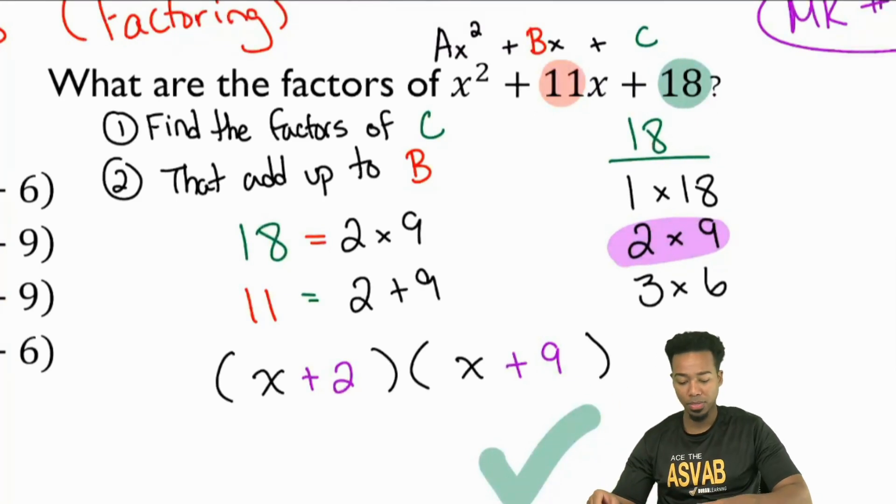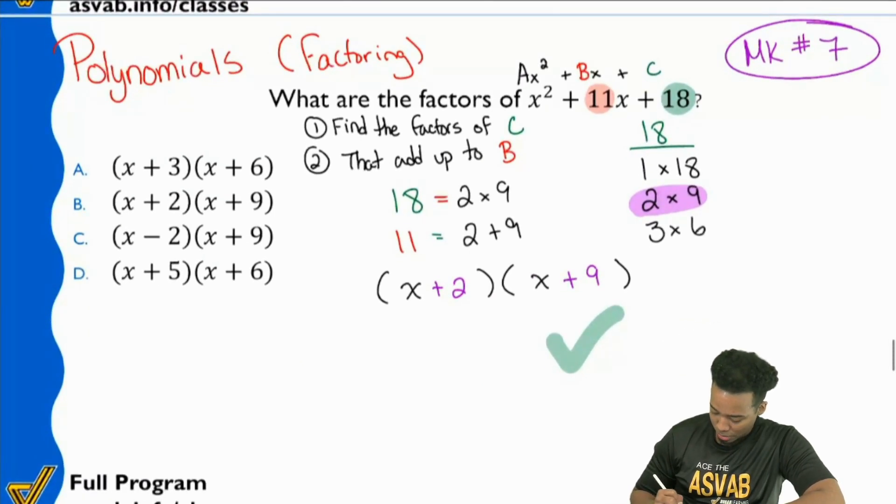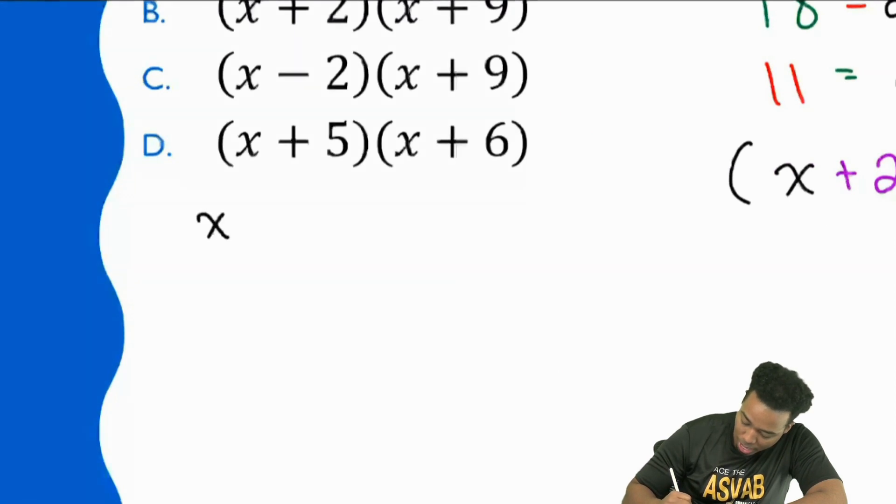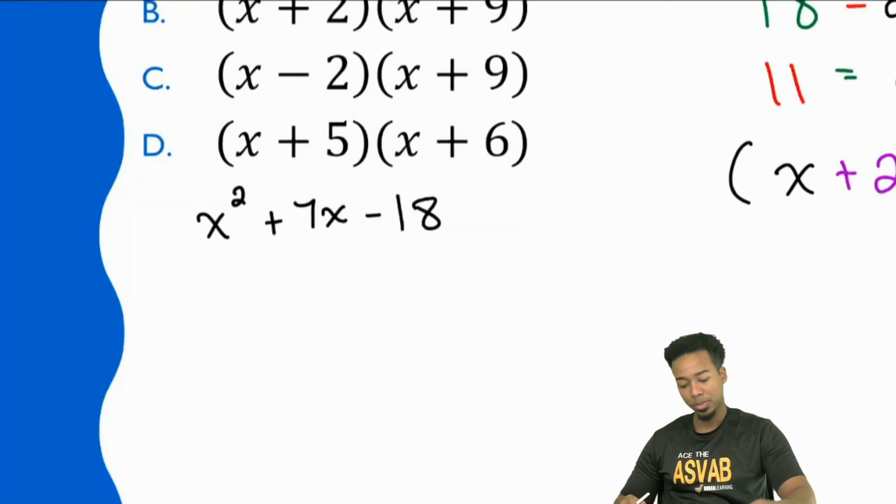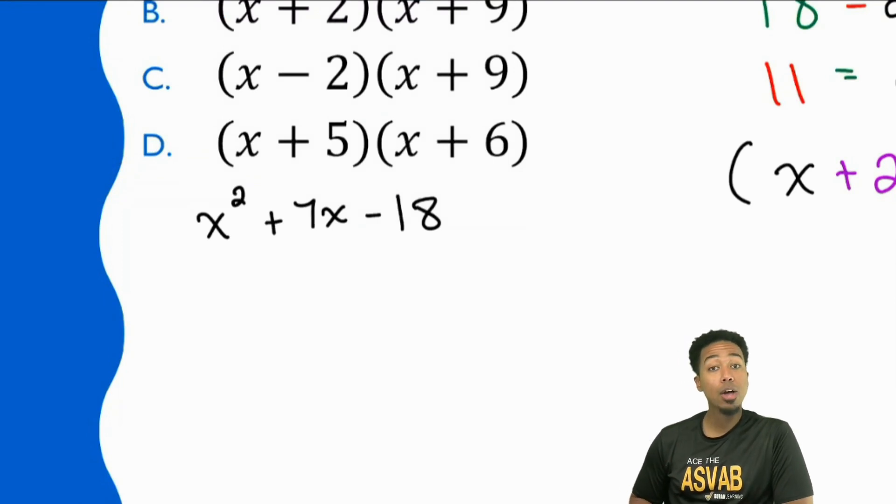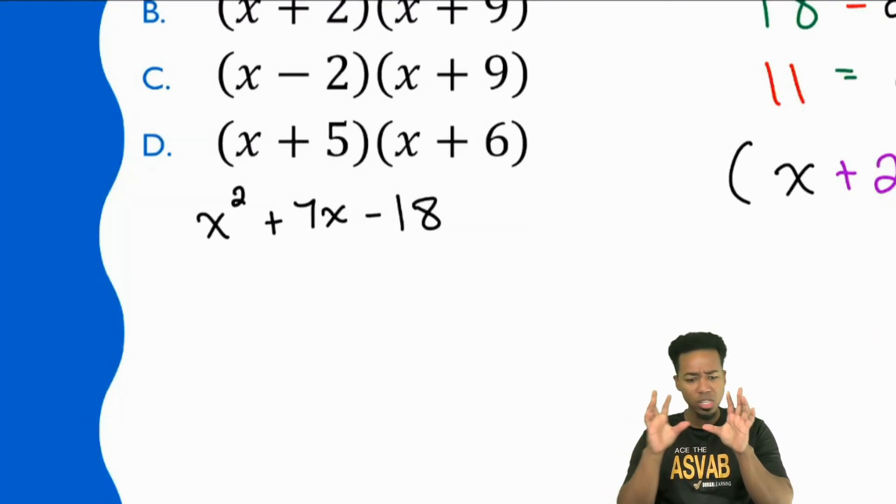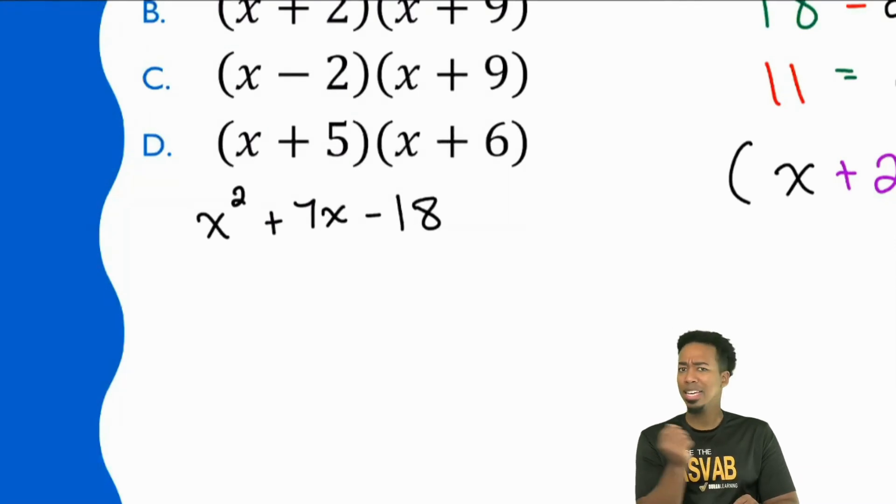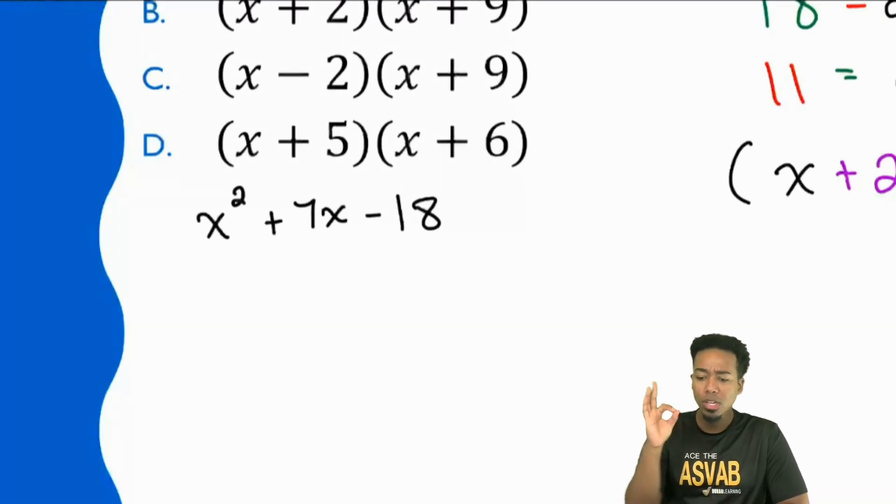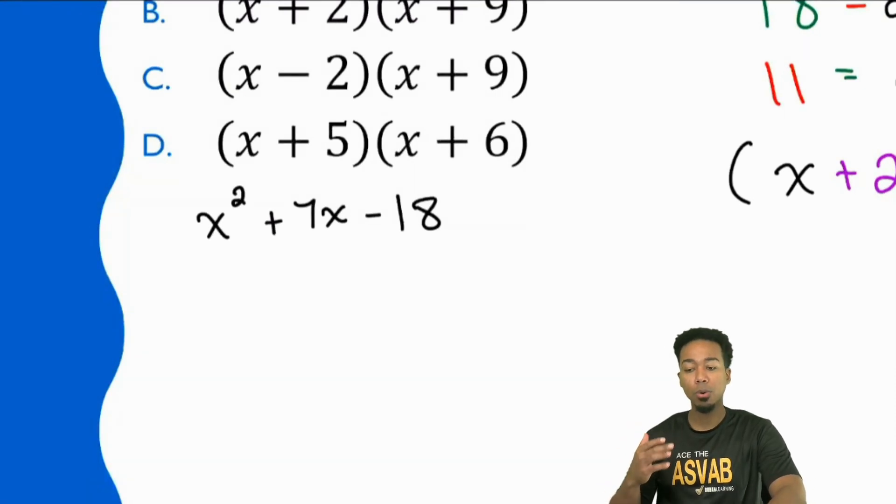That's the one thing that trips everyone up when it comes to factoring polynomials. Here's the example that I'll give you. Suppose we have x² plus 7x minus 18. Let's say that's what we're trying to factor. Well, now you have a negative 18. Everybody, you still have to think about the factors that go to negative 18. And what's the only combination of numbers that can get you to a negative number when you multiply? Is it positive times positive, negative times negative, or positive and negative mixed? Which one is it?